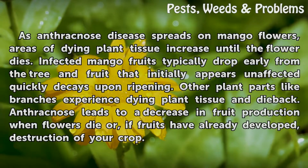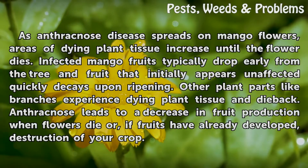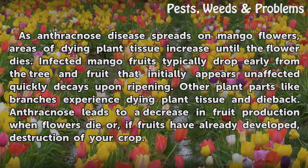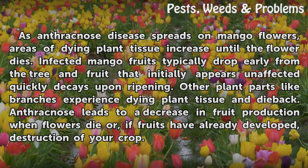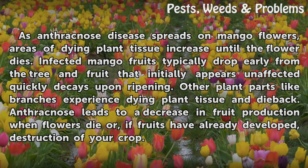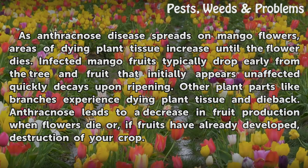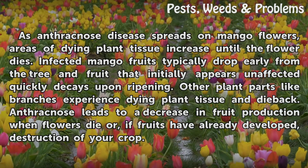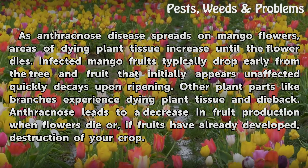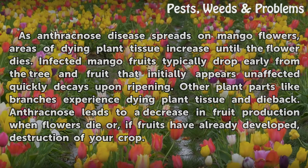As anthracnose disease spreads on mango flowers, areas of dying plant tissue increase until the flower dies. Infected mango fruits typically drop early from the tree, and fruit that initially appears unaffected quickly decays upon ripening. Other plant parts like branches experience dying plant tissue and dieback. Anthracnose leads to a decrease in fruit production when flowers die, or if fruits have already developed, destruction of your crop.